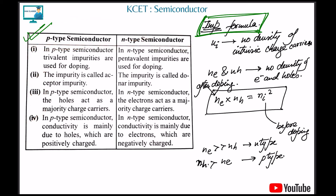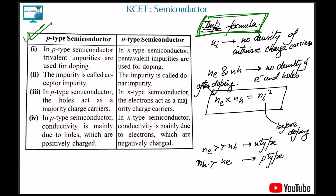P-type uses trivalent impurities; n-type uses pentavalent impurities. The trivalent impurity is called acceptor impurity because it accepts electrons, and pentavalent is called donor because it donates extra electrons. In p-type, holes are the majority carriers; in n-type, electrons are the majority carriers. Conduction in p-type is due to holes; in n-type it is due to electrons.